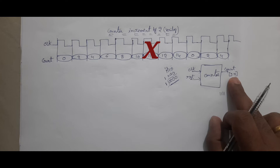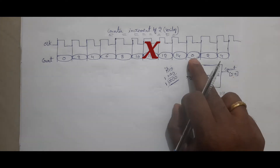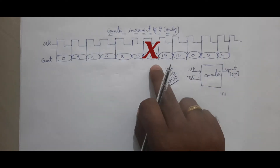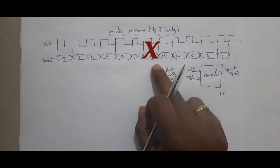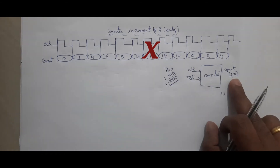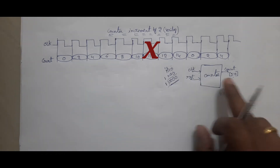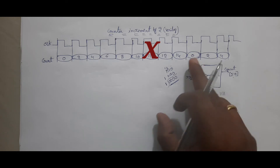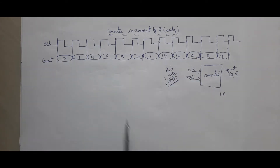Got it? If suppose the counter was 4 to 0, then you would see 16 here — like that you can go further. Now I take a 4-bit counter, that is why the counter width will be 4 bits. That is why after 14, it will go to 0. This is the waveform I explained here.